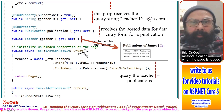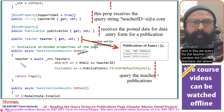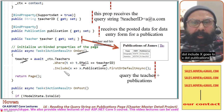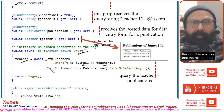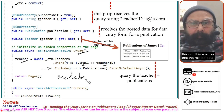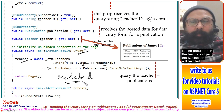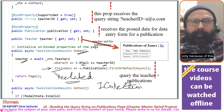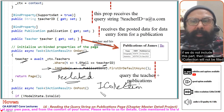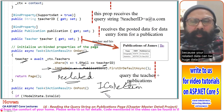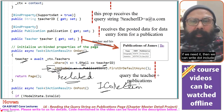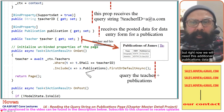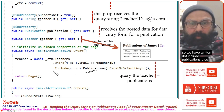Next, the OnGet method is called when the page is loaded. In it, we query TeacherContext.Teachers where email equals TeacherId, and then we write .Include(x => x.Publications). This ensures that the related publications data is also populated in the teacher object — the ICollection will be filled only because of this. If we do not include this part, the ICollection will not be filled, because related data can be large and is made optional. Since we need it here, we write .Include(Publications).